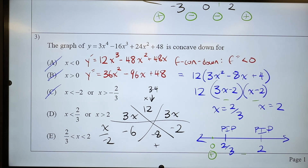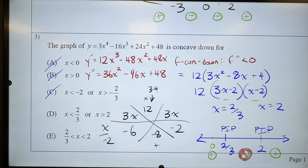It's going to be turning into a negative and a positive, meaning I have inflection points. These are not pips, they're actually IPs — they're actually inflection points. And I'm concave down only between where I'm negative here — between 2/3 and 2. What says between 2/3 and 2? E. Correct answer, E.